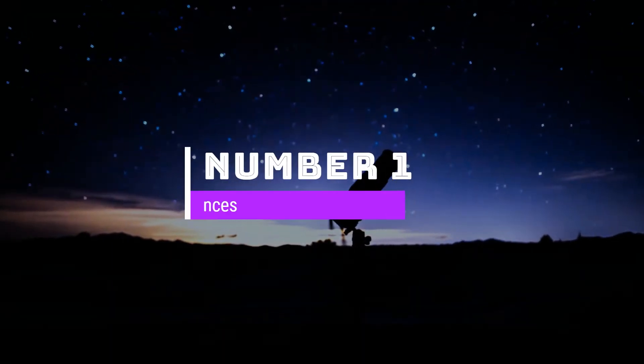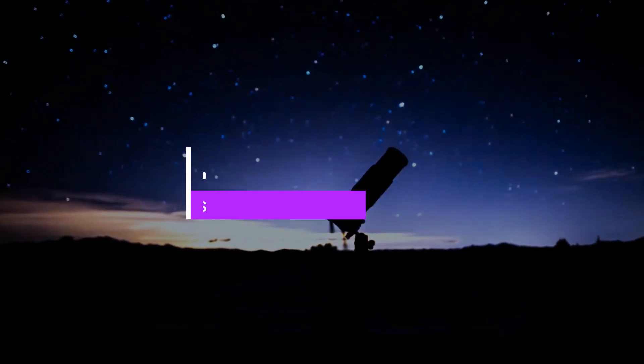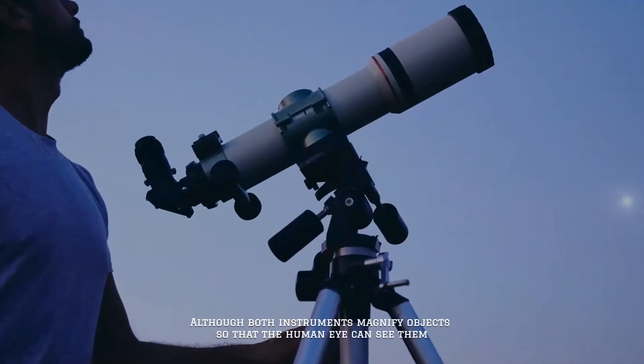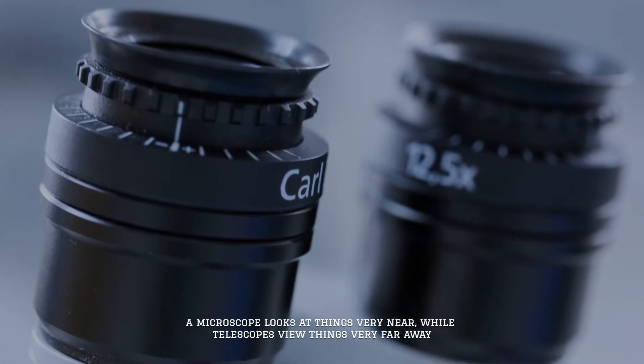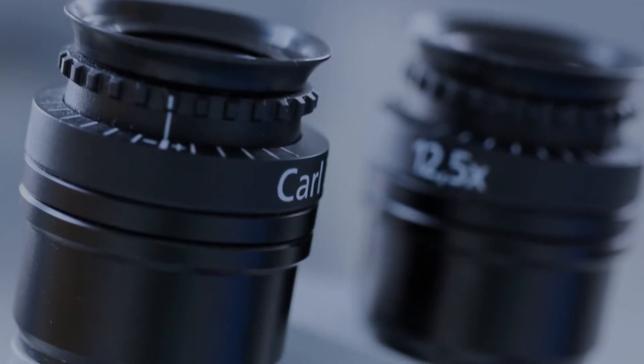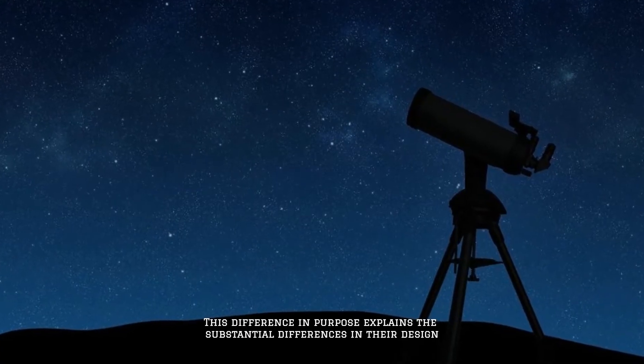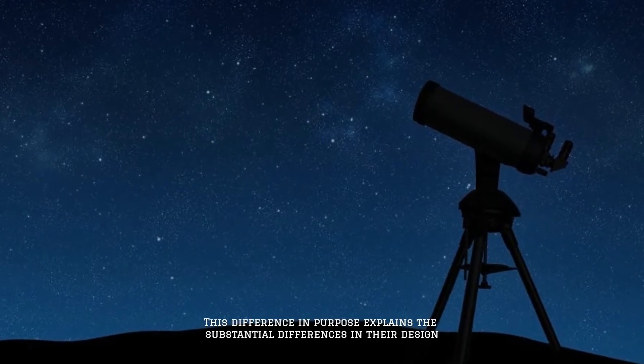Number one: basic differences. Although both instruments magnify objects so that the human eye can see them, a microscope looks at things very near while telescopes view things very far away. This difference in purpose explains the substantial differences in their design.